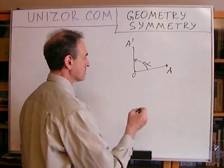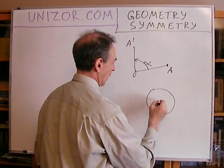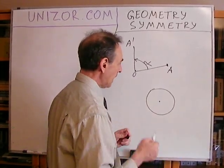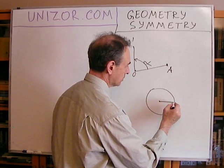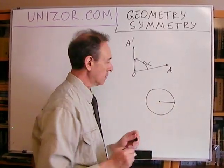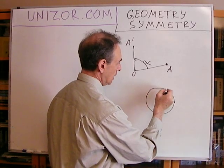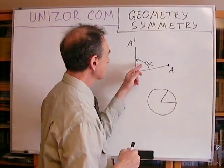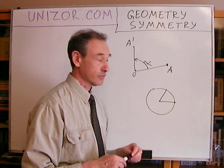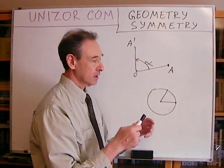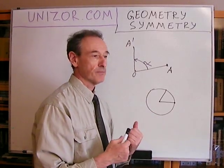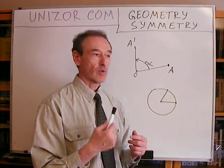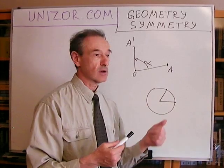Consider for instance a circle, where the center of rotation is the center of the circle. If you rotate any point on the curve which is the circle by any angle, it will also fall onto a point of the circle. Basically, regardless of the value of the angle alpha, the circle transforms into itself after this rotation. That's what makes a circle a figure which is symmetrical relative to rotation around its center by any angle.